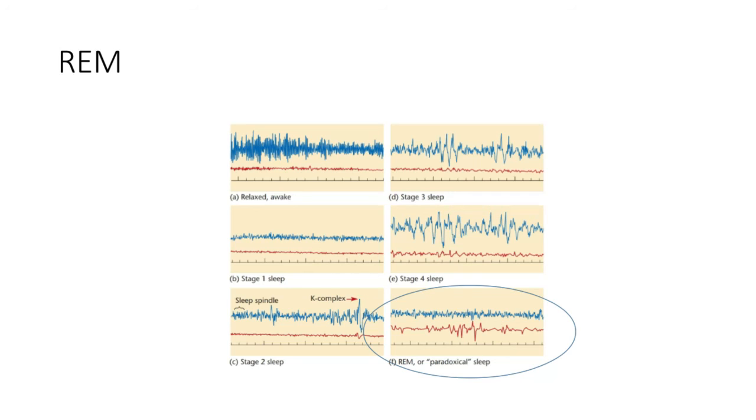So the amplitude is, if you recall from when we talked about audition, amplitude is like the height of the wave. So the waves here are much taller in stage four sleep than in REM, so stage four has higher amplitude. So REM sleep is lower amplitude.